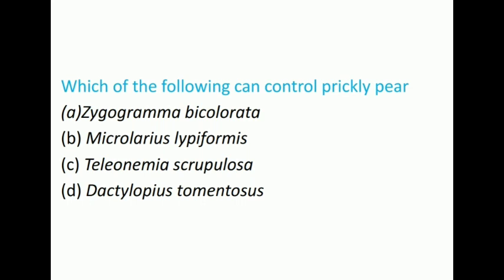The next question is: Which of the following can control prickly pear? The options are Zygogramma bicolorata, Microlarius lypiformis, Teleonemia scrupulosa, Dactylopius tomentosus. The right answer is Dactylopius tomentosus.